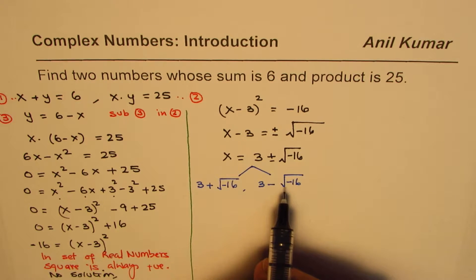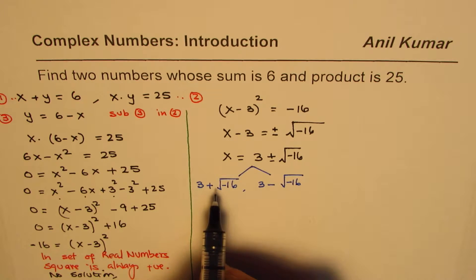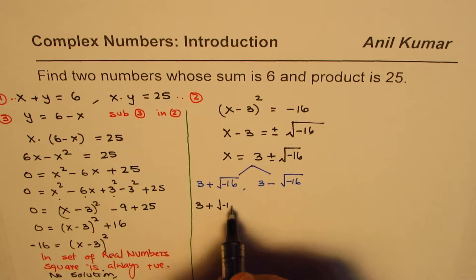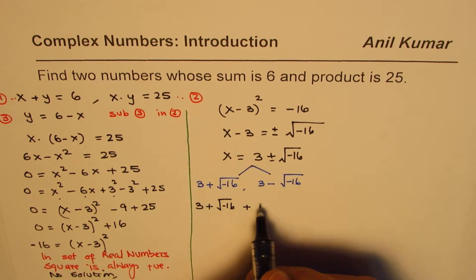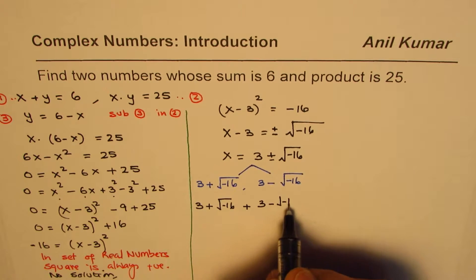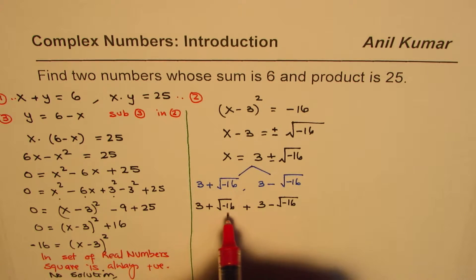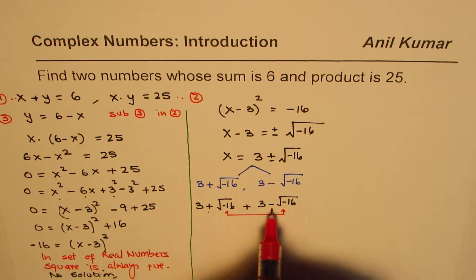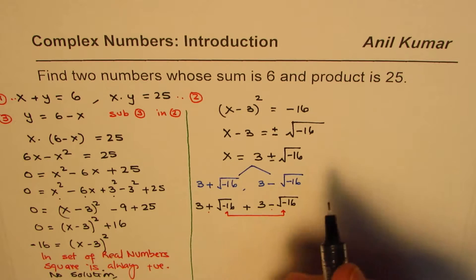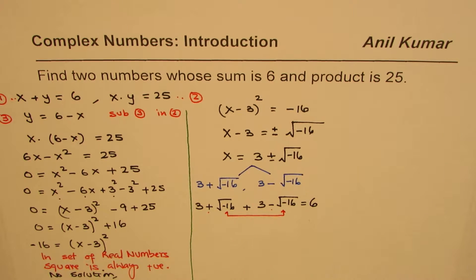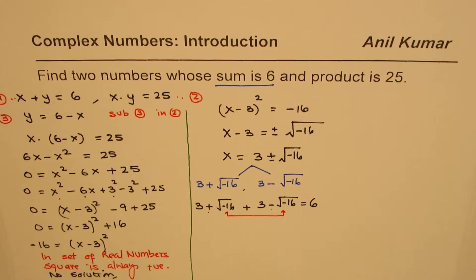In the set of real numbers this doesn't make sense, but let's see what happens if we add these two. Adding (3 plus √(−16)) and (3 minus √(−16)): the square root terms cancel out, and we get 3 plus 3, which is 6. We do get a sum of 6!